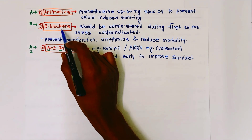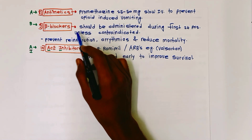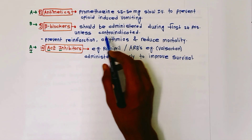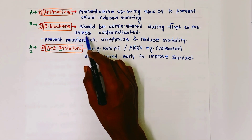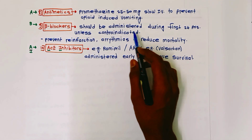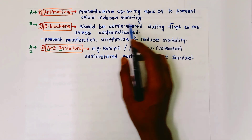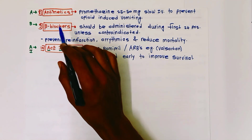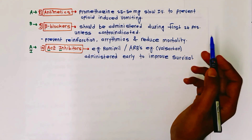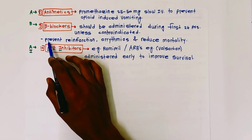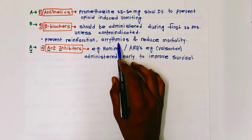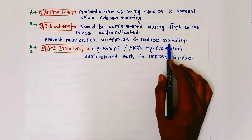B for beta blockers: they should be administered within the first 24 hours unless contraindicated. Beta blockers are given to prevent reinfarction and arrhythmias and to reduce mortality.